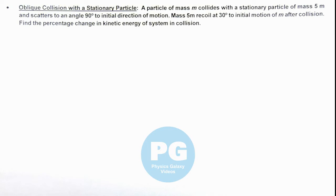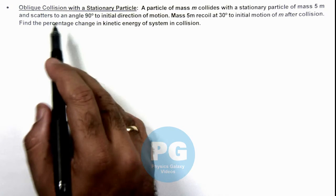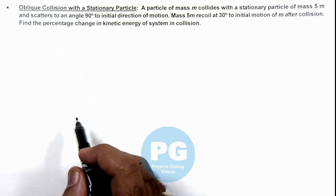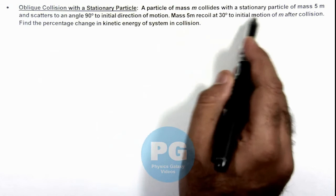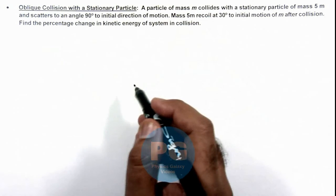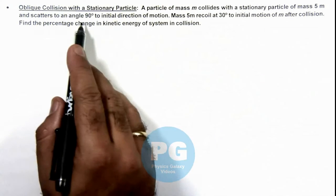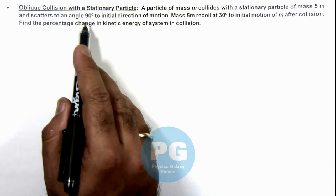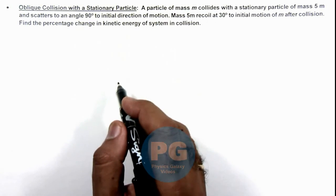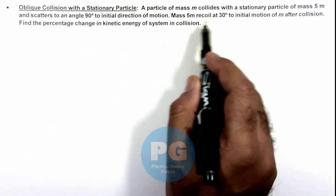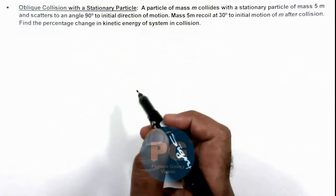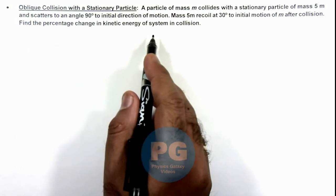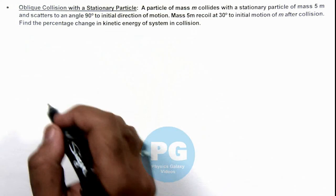In this illustration we'll discuss the oblique collision with a stationary particle. Here we are given that a particle of mass m collides with a stationary particle of mass 5m and it scatters to an angle 90 degrees to the initial direction of motion. If the mass 5m recoils at 30 degrees to initial motion of m after collision, we are required to find the percentage change in kinetic energy of system in collision.